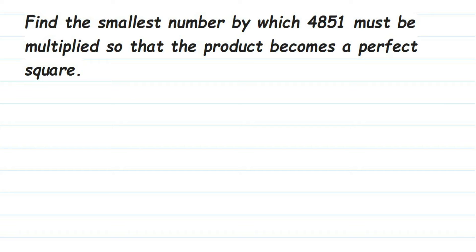Hey everyone, here's a question from square and square root. The question is find the smallest number by which 4851 must be multiplied so that the product becomes a perfect square. So this number is not a perfect square. We have to find out a smallest number so that we can multiply this with 4851 and that number will become a perfect square.